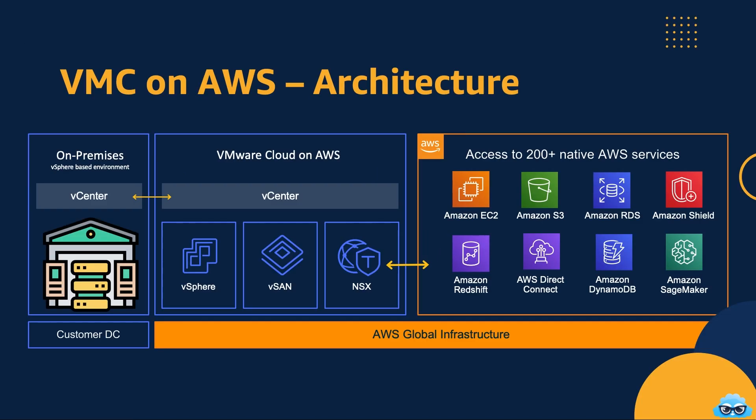Before we plunge into the architectural intricacies, let's revisit the three core components that form the foundation of VMware Cloud on AWS. The first component: the on-premises environment — your existing stronghold, where your infrastructure and operations are already established.